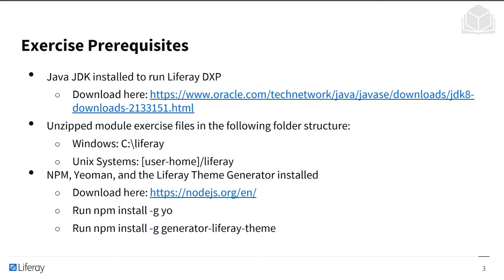You'll also need the module exercises in the following folder structure. If you're on Windows, this will be in a Liferay folder in your C drive. If you're on Unix, this will be in your user home directory with a Liferay directory. You'll also need NPM, Yeoman, and the Liferay Theme Generator installed — available at Node.js.org. Install by running npm install -g yo, then run npm install -g generator-liferay-theme to install the theme generator.